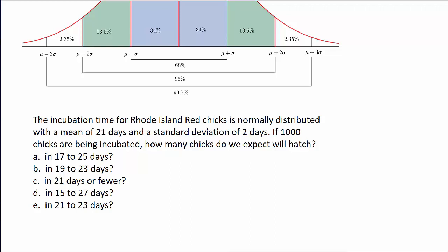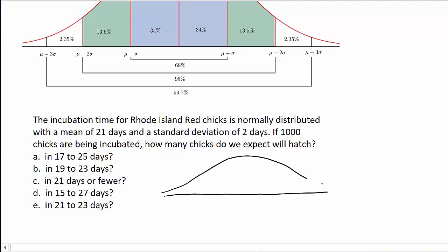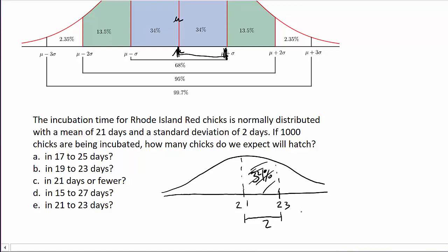For part E, it asks about 21 to 23 days. We're just looking for the area between the mean and 23. That distance is 2 units, which is one standard deviation above the mean. The area from the mean to one standard deviation above the mean is 34%. So how many chicks will hatch? That's 1,000 times 0.34, which gives us 340 chicks.